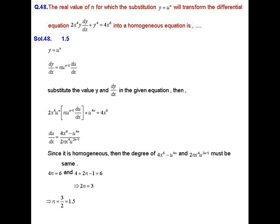From this we compute du/dx as du/dx equals (4x⁶ minus u^(4n)) divided by (2n · x⁴ · u^(2n−1)). For this to be a homogeneous equation, the numerator and denominator must have the same degree. Since we have x⁶ in the numerator, the degree must be 6. So 4n equals 6 and 2n minus 1 plus 4 equals 6. Solving these gives n equal to 3/2, that is n equal to 1.5, which is our answer.